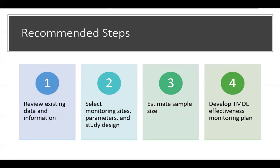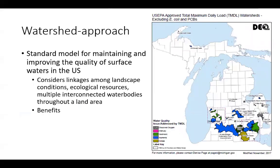TMDL monitoring is done on a watershed approach. The idea is to look at water quality holistically. Looking at the Grand River watershed, for example, you consider how land use, ecological resources, and interconnected water bodies all impact water quality and interact with one another, with the goal of improving water quality.